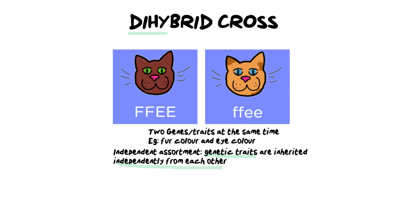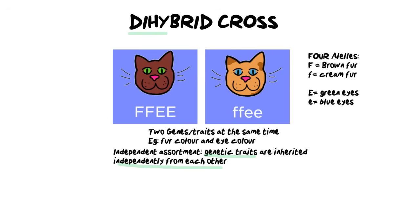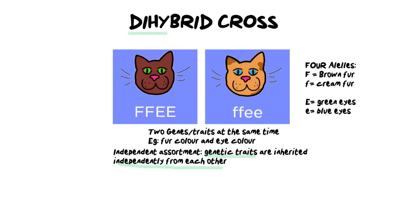When we do dihybrid crosses, it's really important to know what all of your lettering means. Dihybrid crosses in their simplest form can follow complete dominance, and we are only going to do complete dominant crosses in this video. For that, we need a set of four alleles — representing our dominant and recessive traits.